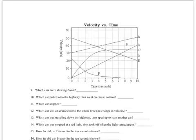Which of the cars are slowing down? That means their velocity is going to start high and get lower. So here's one — F — and the other one is E. Our answers are E and F are the two that are slowing down.